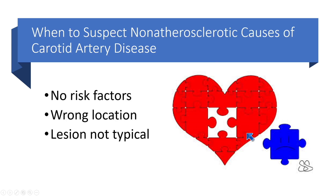When do you suspect non-atherosclerotic causes of carotid artery disease? First, think about the patient in front of you — do they have traditional risk factors: age, hyperlipidemia, hypertension, smoking? Is the lesion in the correct location for atherosclerosis? If you see a lesion in the distal ICA, it's probably not atherosclerotic. And is the lesion typical appearing — heterogeneous, hypoechoic, a focal area of plaque?